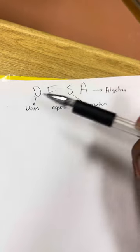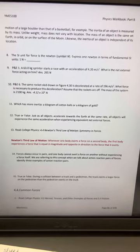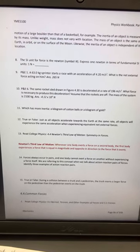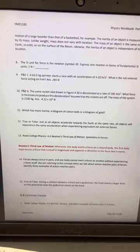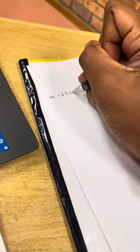So with the DESA study method, the first step would be the data. This is where we take out everything that they gave us. In number 9, they say a 63 kilogram sprinter, so the mass is 63.0 kg.